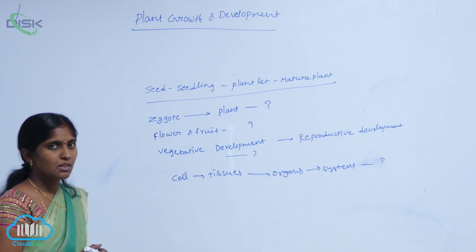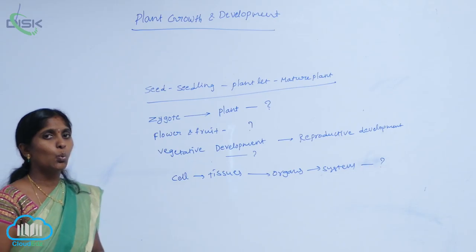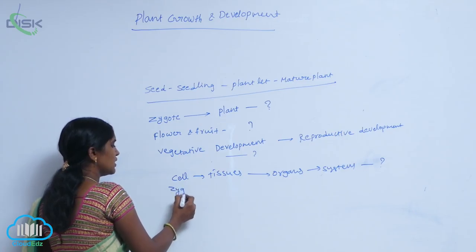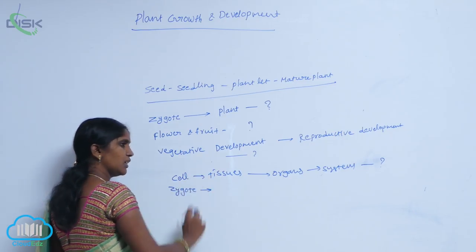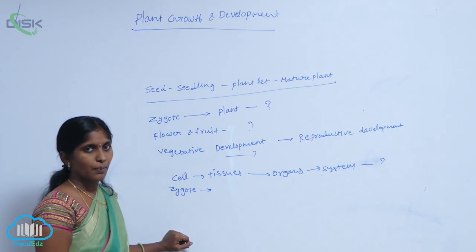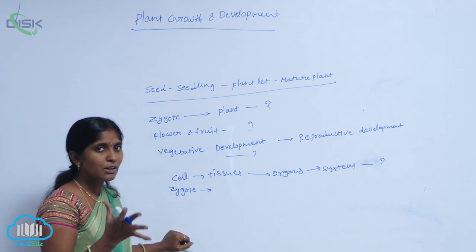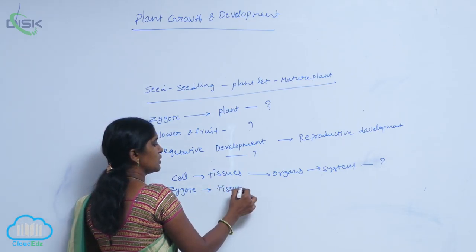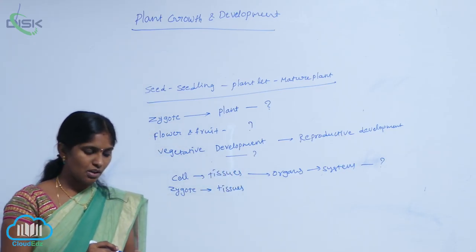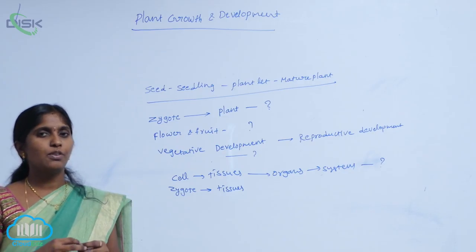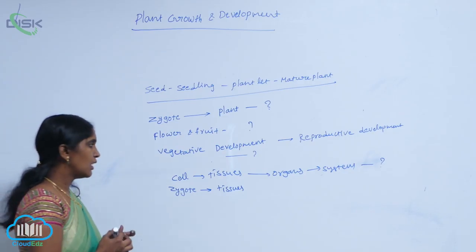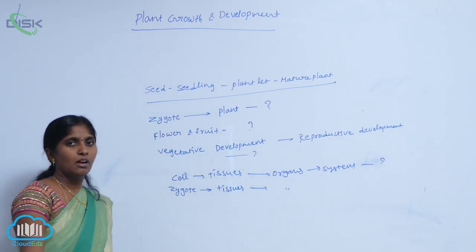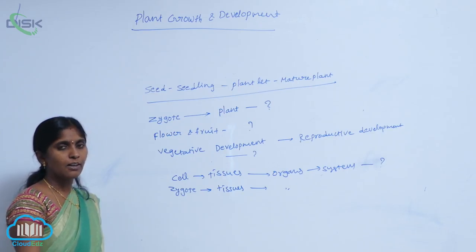Growth starts with a single cell — the fertilized cell, that is the zygote. The zygote grows through successive cell divisions. Then the cells multiply and are termed as tissues. These tissues are organized for a specific function and are made into organs. The organs can regulate the system.